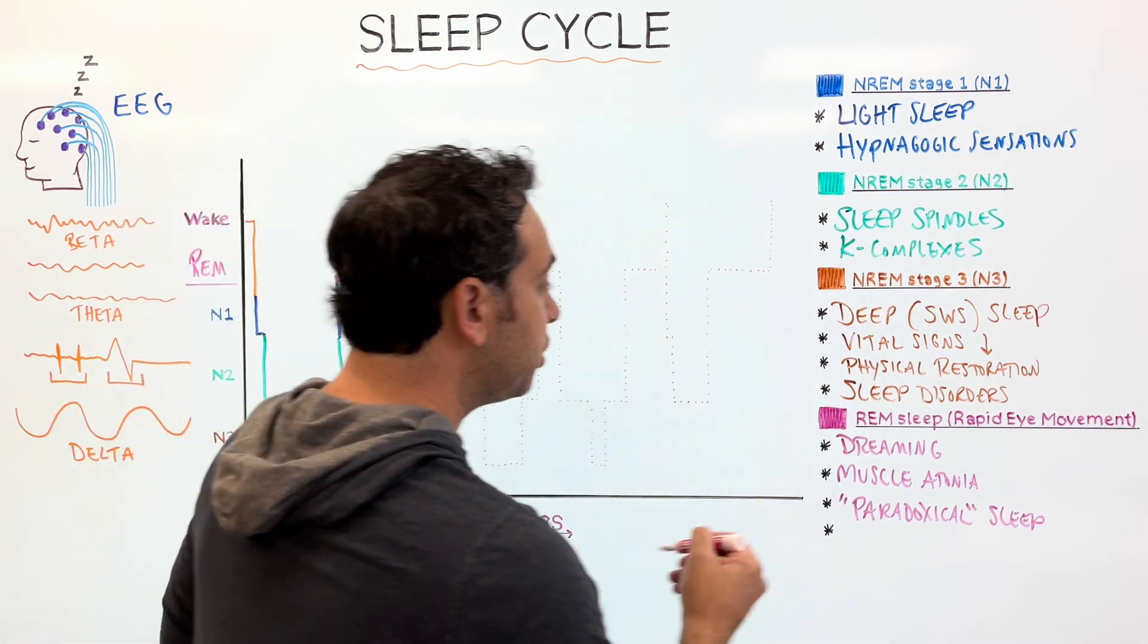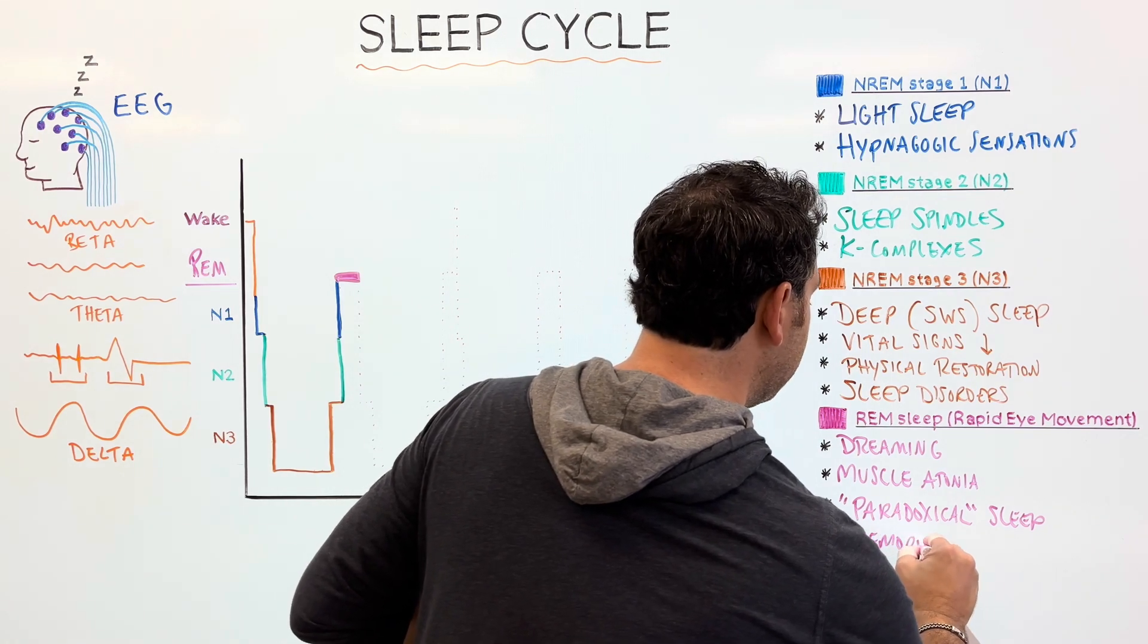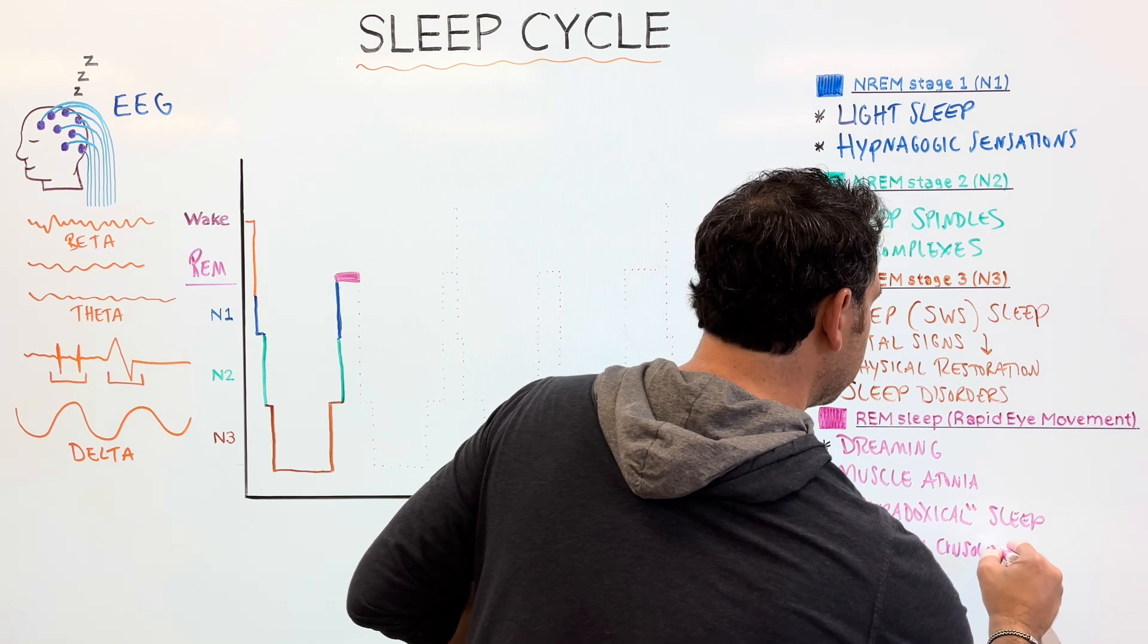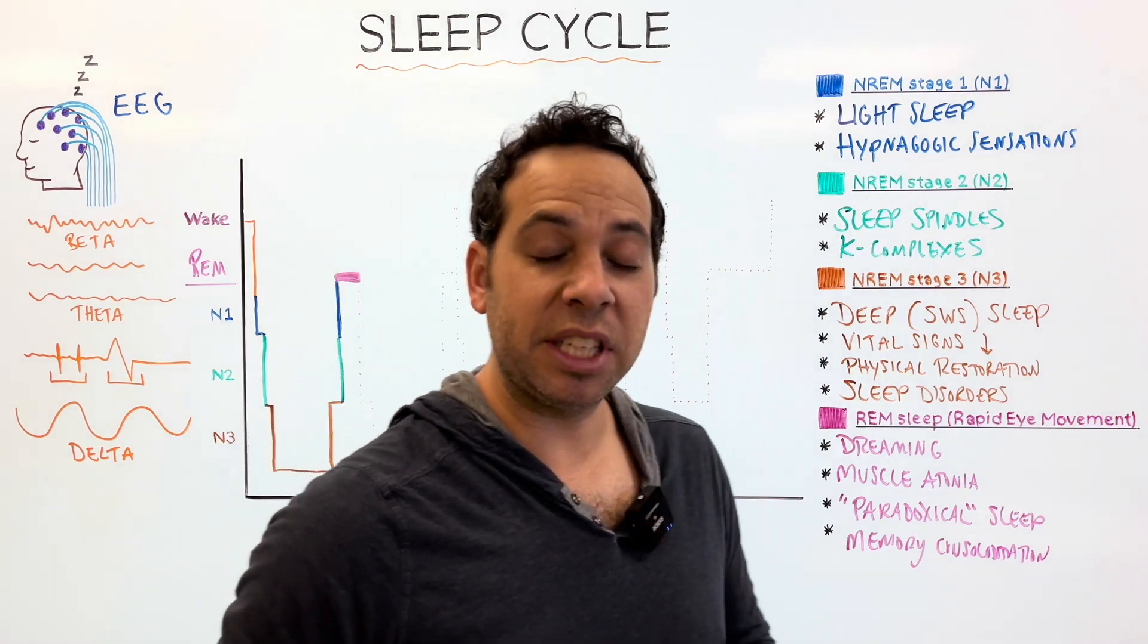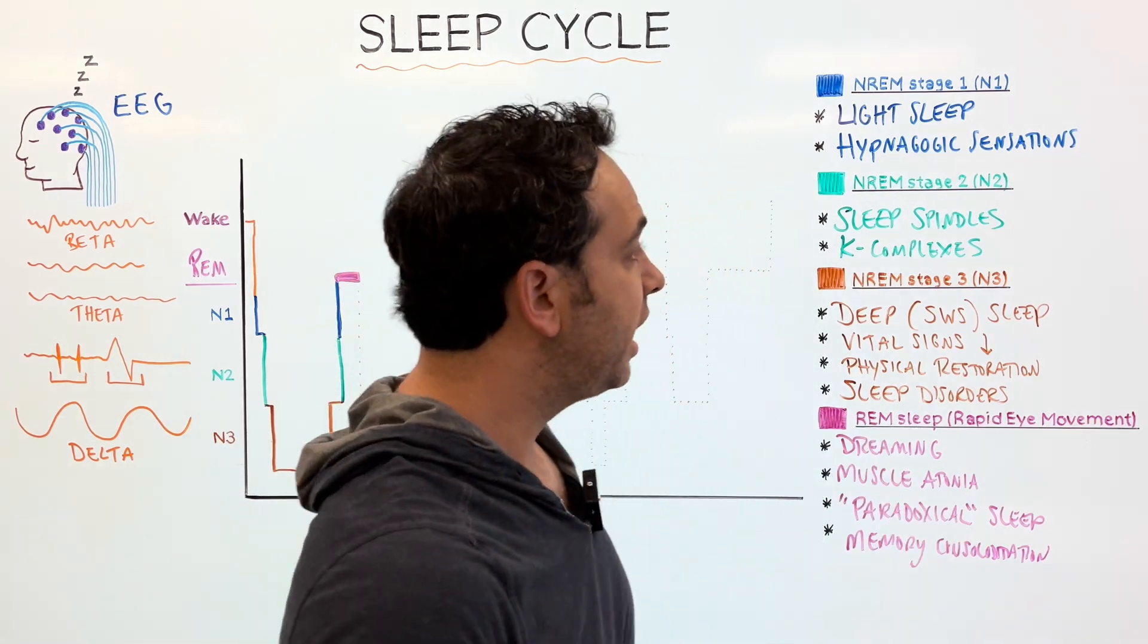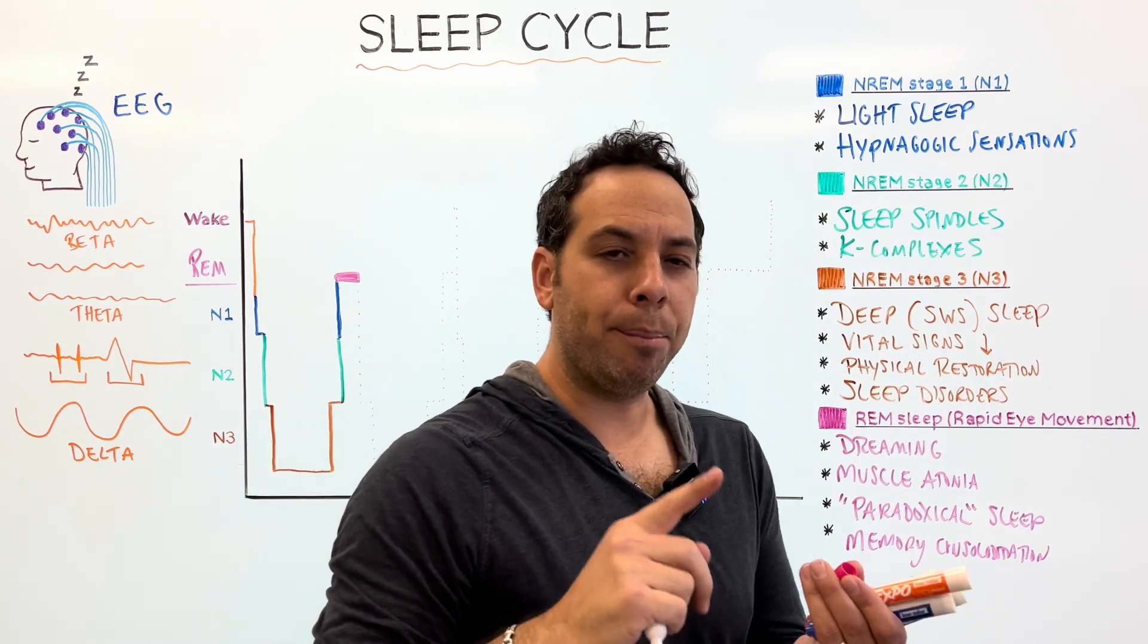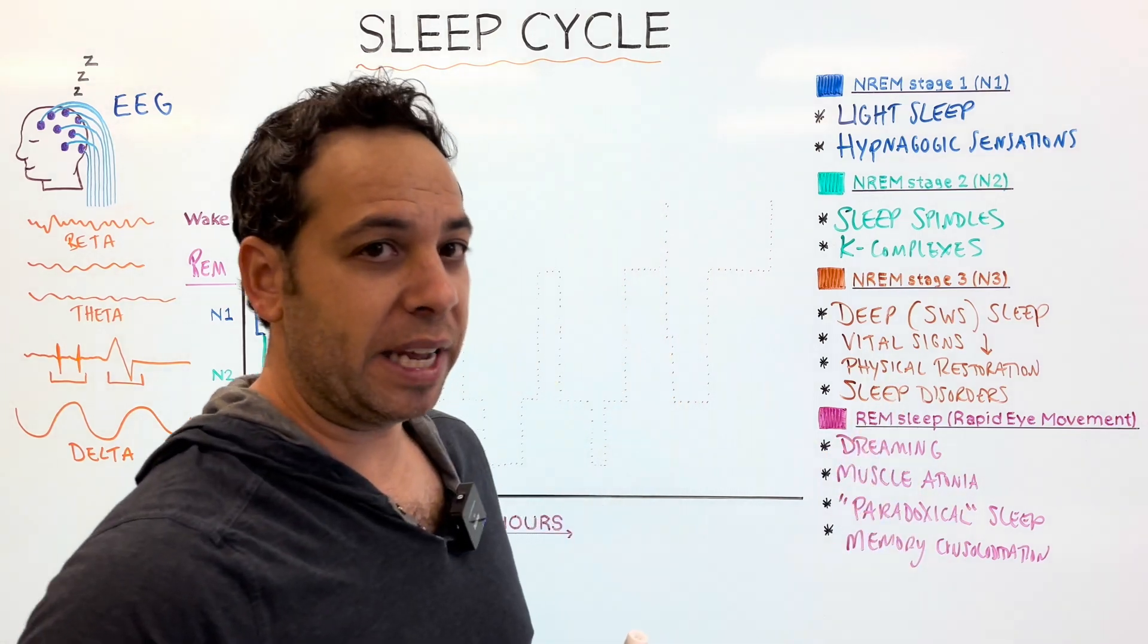So, your brain sometimes doesn't know the difference between dreaming and wakefulness. So, we have active mind, but our body can't move, our body is paralyzed. And lastly, research has shown that this is a vital phase for a lot of things. Specifically, memory consolidation. So, we're able to store memories in this sleep, specifically procedural and emotional memories. There's some memory consolidation in stage two as well, but it's important for memory, learning, creativity, problem solving. This is a very, very important phase.